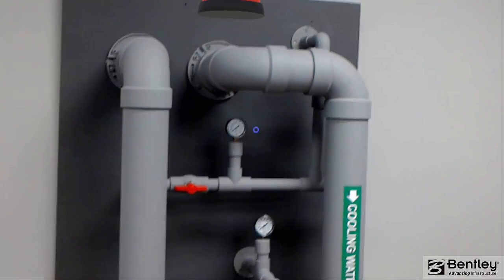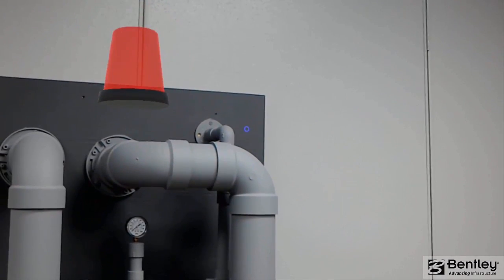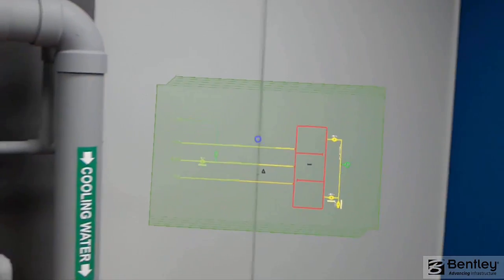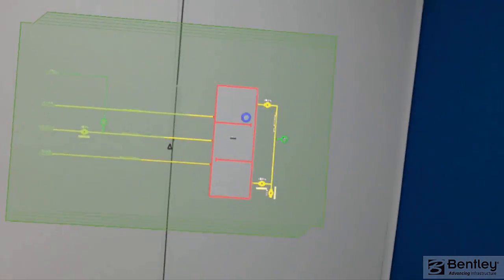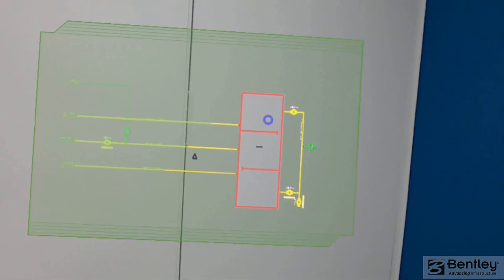Okay, something's wrong here. What's the problem? Display P and ID. Well, we have a heat exchanger here. Okay.